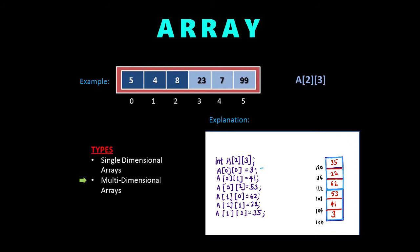These first three items form one part of the first dimension, and the next three items form the next part. All these individual parts are items of the second dimension. This is how a multi-dimensional array is created. We can also create multi-dimensional arrays with more than two dimensions.